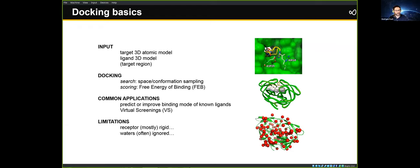You can use this approach for anything — from knowing where a known binder binds, to looking for brand new molecules for a target that has no known binders. One key limitation is that the receptor is mostly rigid, which is often ignored. To overcome that, one of Gareth's great contributions to the project was the addition of flexible residues — if you know a residue can move, you can model it in a flexible way.